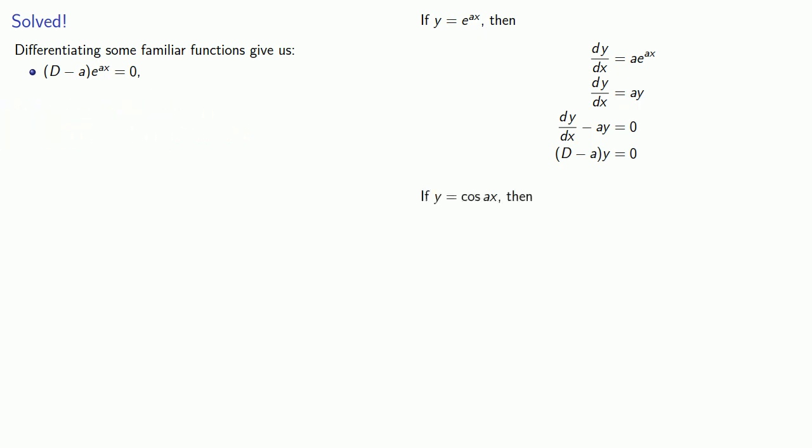If y equals cosine of ax, then the derivative will be negative a sine ax. Since this doesn't recover the function, we'll differentiate again. Here we do have our original function, so rewriting this in operator form gives us (D² + a²).